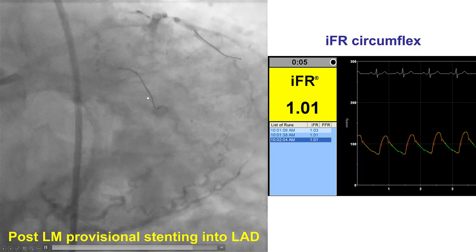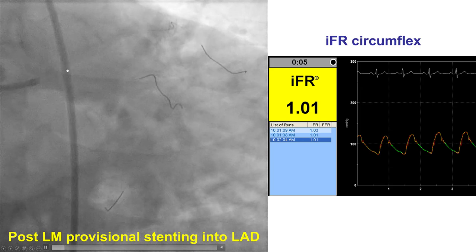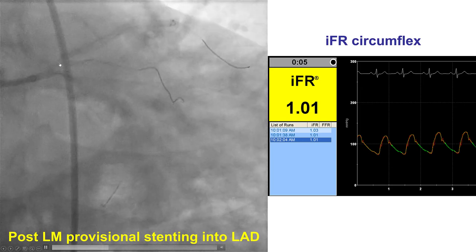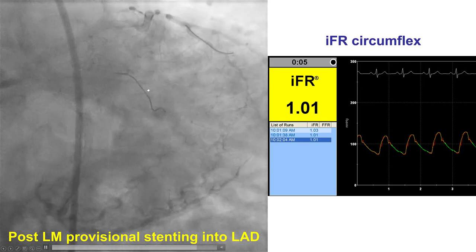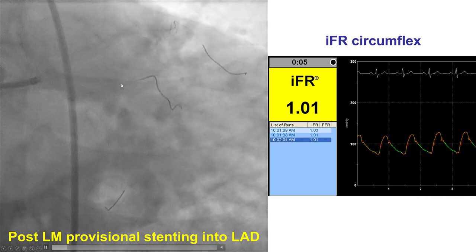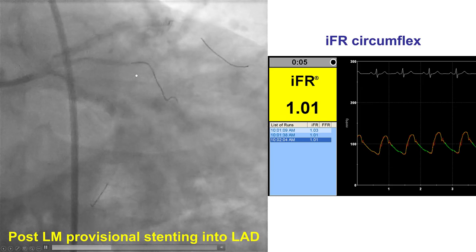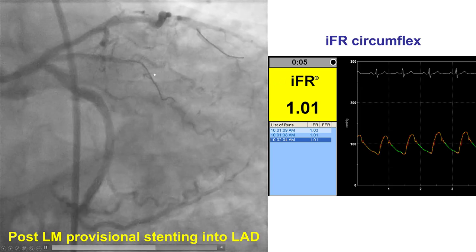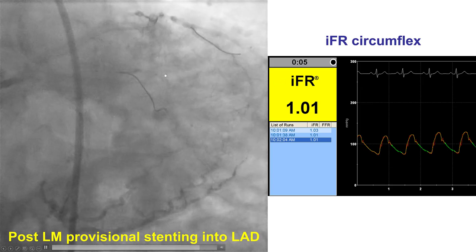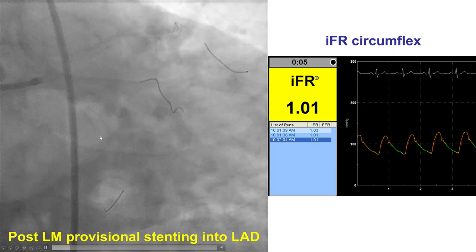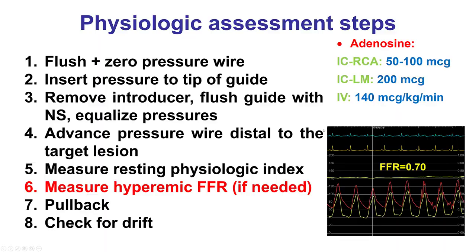This is an example in which, after stenting, the resting IFR is measured into the circumflex and into the ramus branch — and that is non-ischemic, suggesting there is no significant lesion at the origin of those branches.